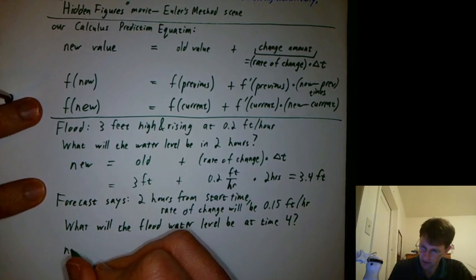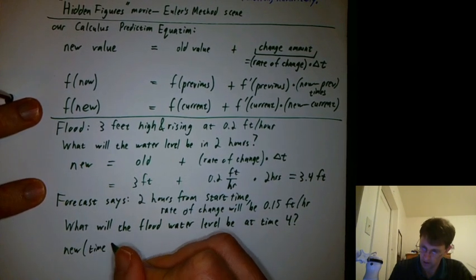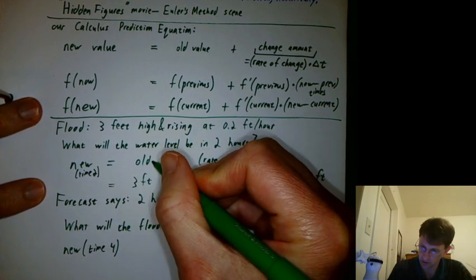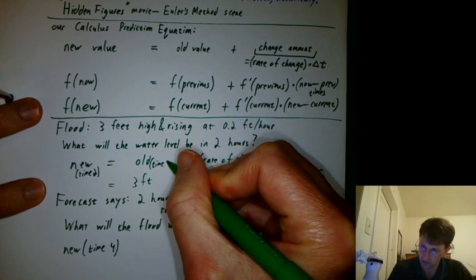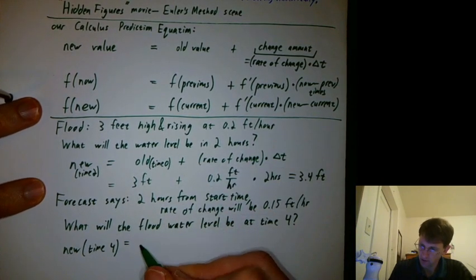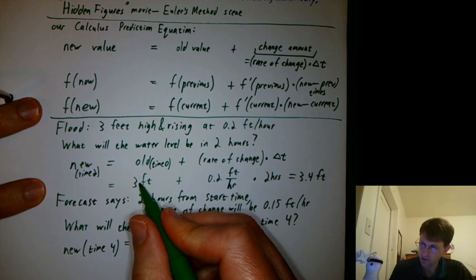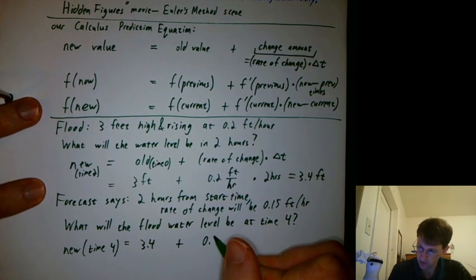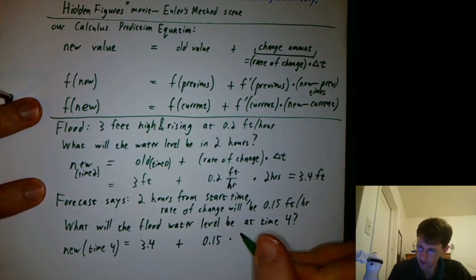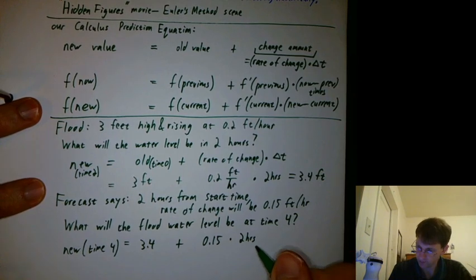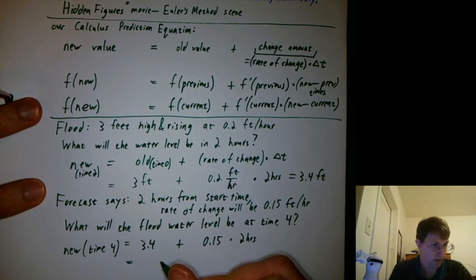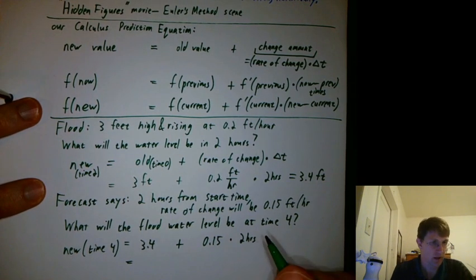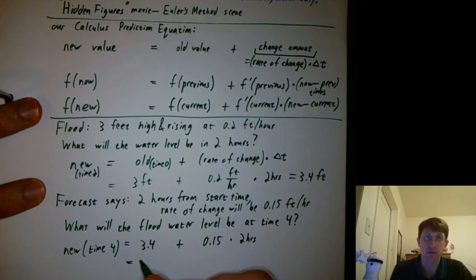Well, again, we can say new, now this is at time four, where this was at time two before, and this was at time zero. New, well, now instead of using three feet, I'm going to use the updated version. So, it'll be 3.4 plus the new rate of change times the new delta T, which is still two hours. So, you'd get, well, whatever that is, the arithmetic isn't important. I guess it'd be 3.7. So, that would be the value at time four.